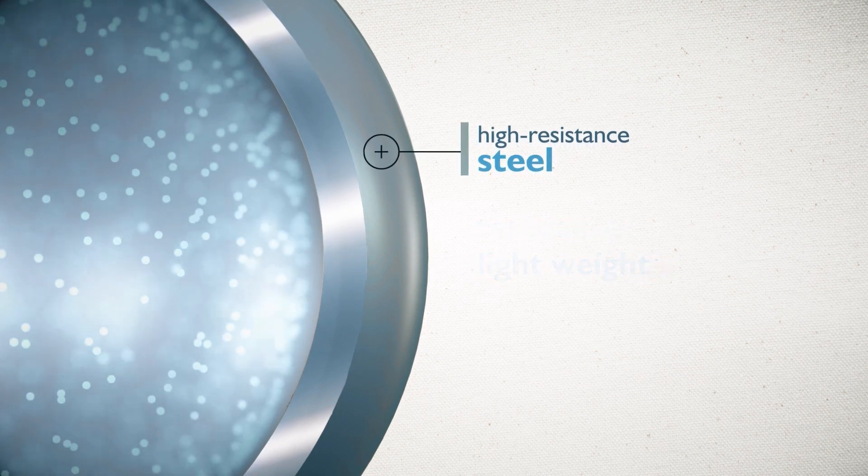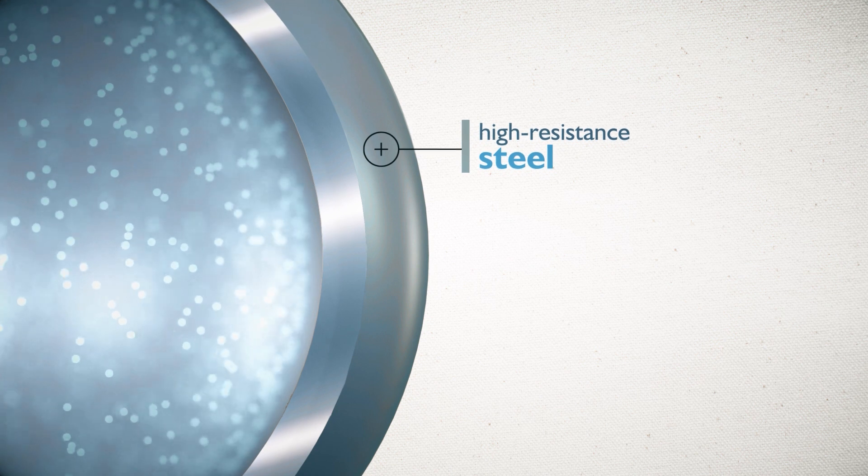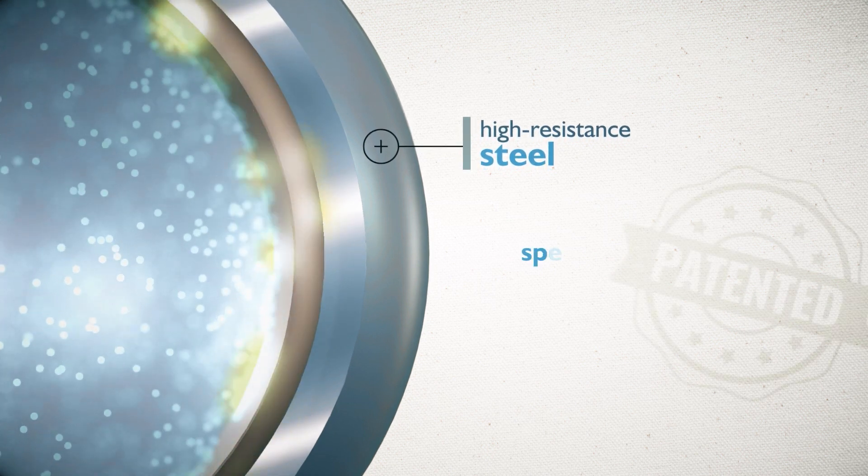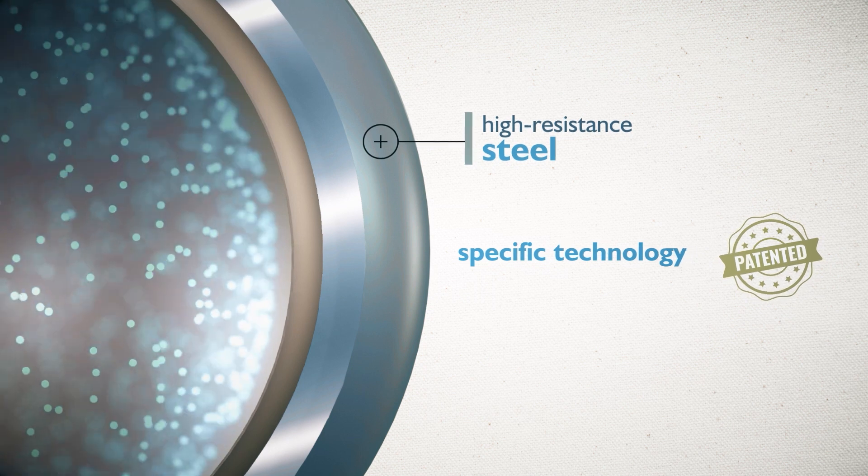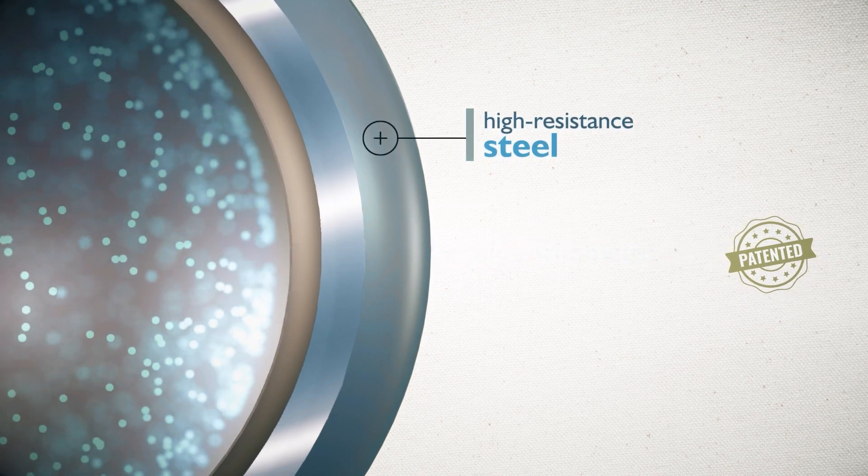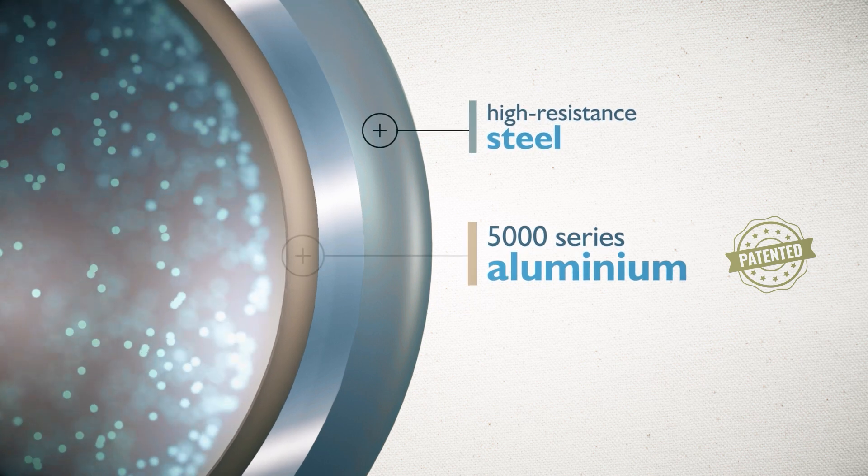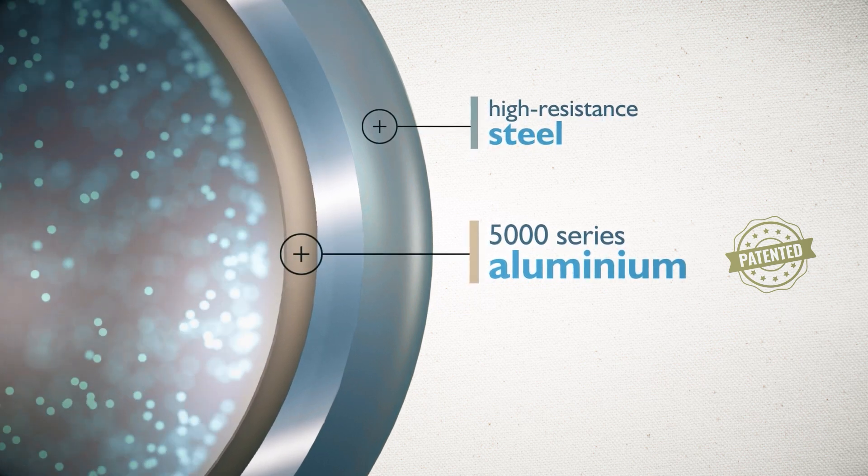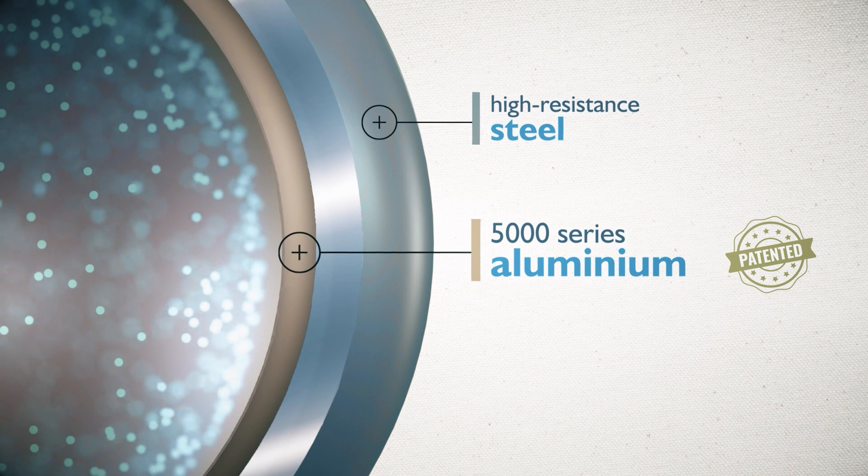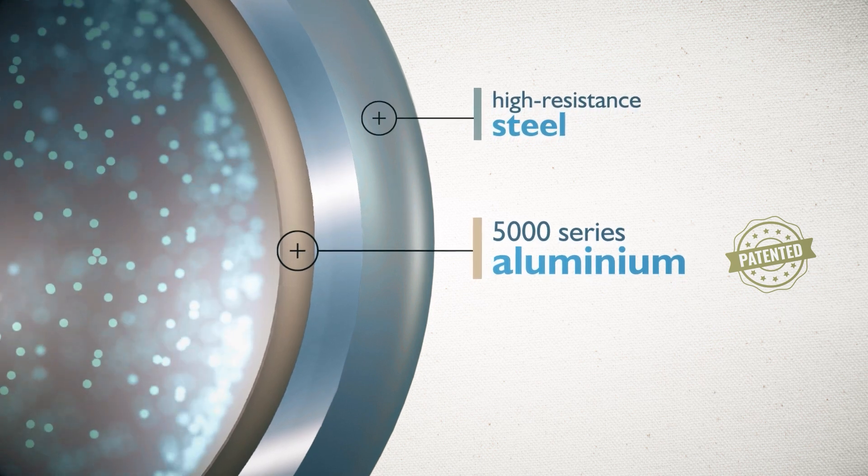To tackle the typical deterioration phenomena of this steel, Walter Tosto has patented a specific technology to create inside the tank a second chamber in 5000 series aluminium. This alloy has a very low permeability to hydrogen gas, thus guaranteeing a significantly high level of safety.